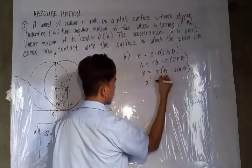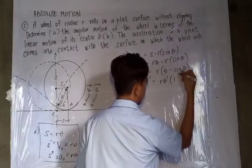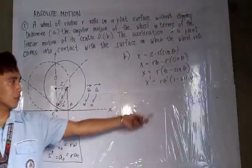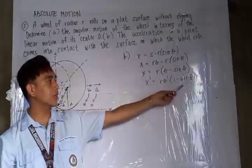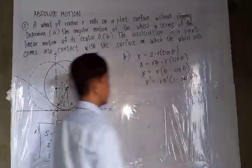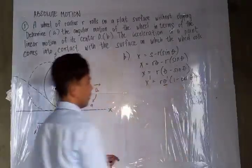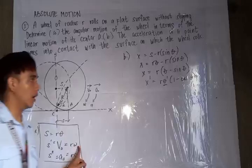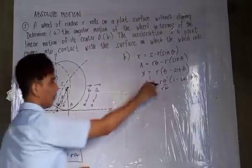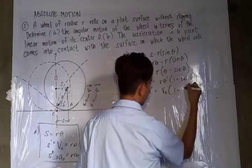After that, we take the derivative. So the first derivative equals R times theta prime multiplied by (1 minus cosine theta) — correction, using trigonometric identities, this should be cosine, not sine. Since theta prime is equal to our angular velocity, and R multiplied by angular velocity equals initial velocity V₀, we simplify: x prime equals initial velocity multiplied by (1 minus cosine theta).